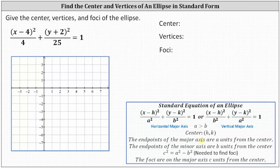The endpoints of the major axis are a units from the center, and the endpoints of the minor axis are b units from the center. The endpoints of the major and minor axes make up the vertices. To find the foci, we need to find c first using the equation c squared equals a squared minus b squared. The foci are always on the major axis, c units from the center.